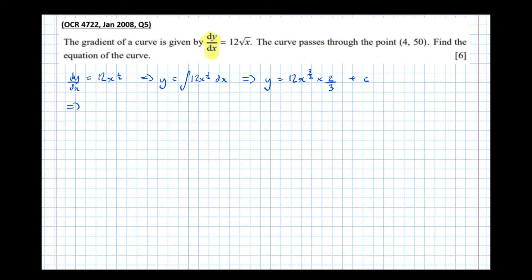So concluding, that means that y equals, 12 times 2 is 24, divided by 3 is 8. So 8x to the 3 over 2, plus c.